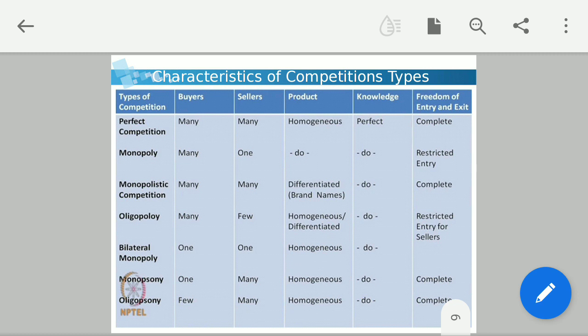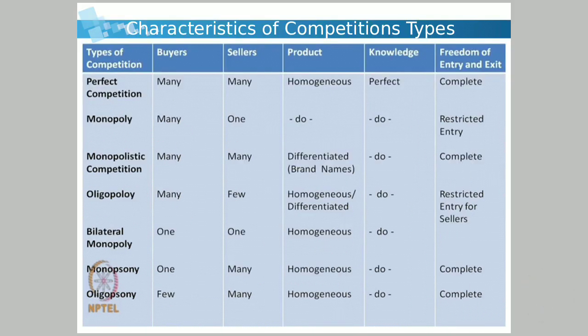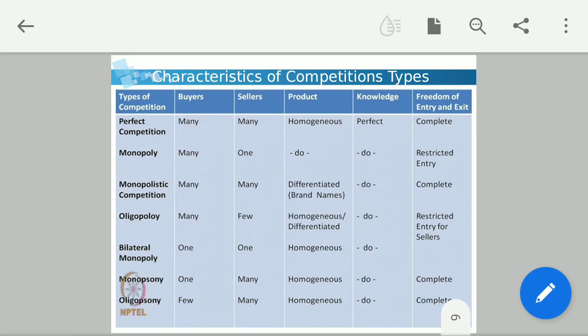Monopolistic competition has many buyers and many sellers, but the product is differentiated — meaning there are different brands. Both buyers and sellers have knowledge about the product and there is complete freedom of entry and exit. For example, in the phone market there are many buyers and many sellers, with differentiated products across various brands like Nokia, Samsung, and Apple. Any company can enter and any buyer can purchase — this is monopolistic competition.